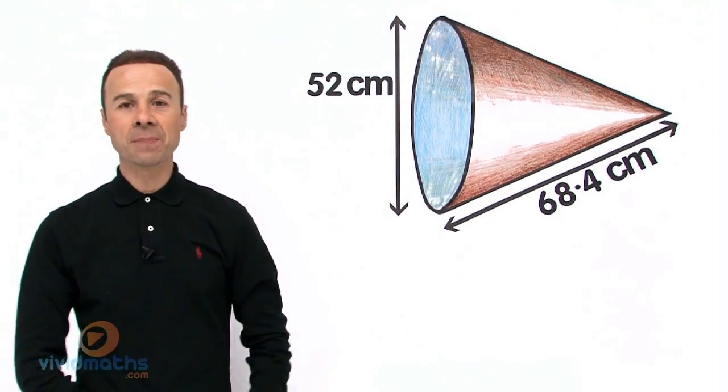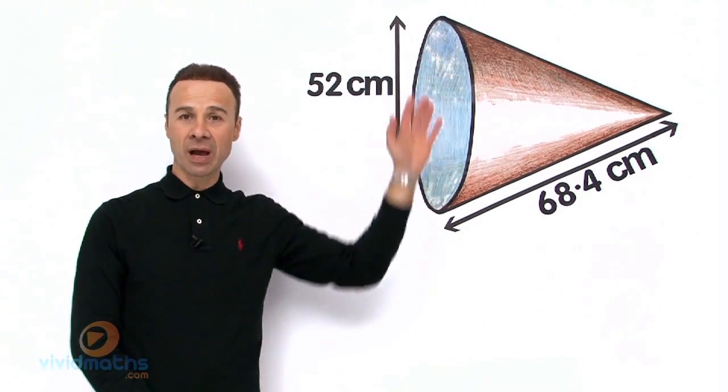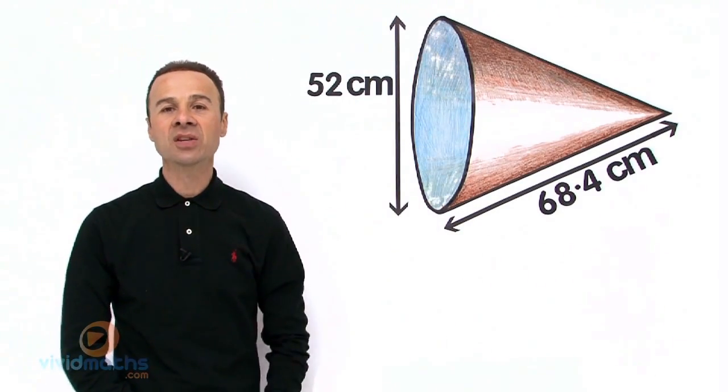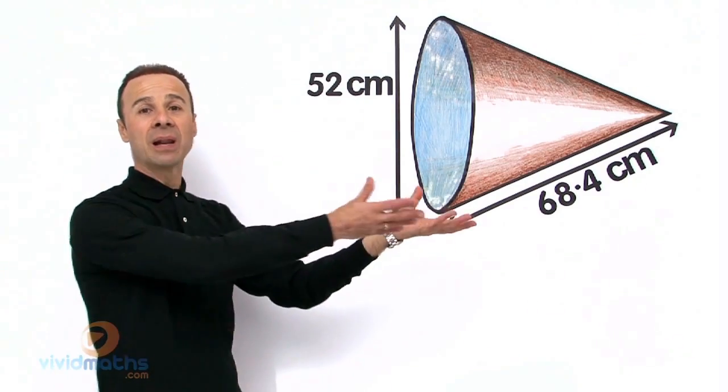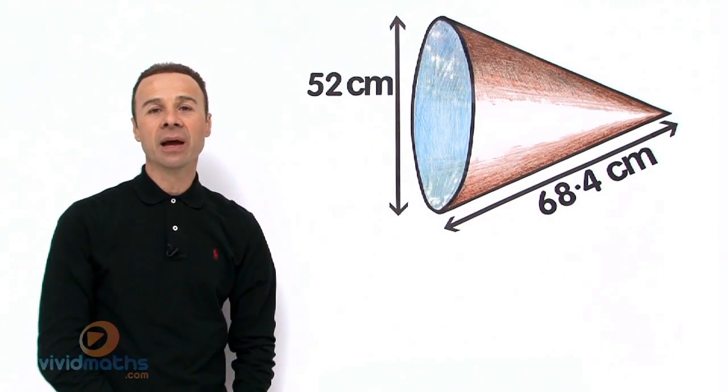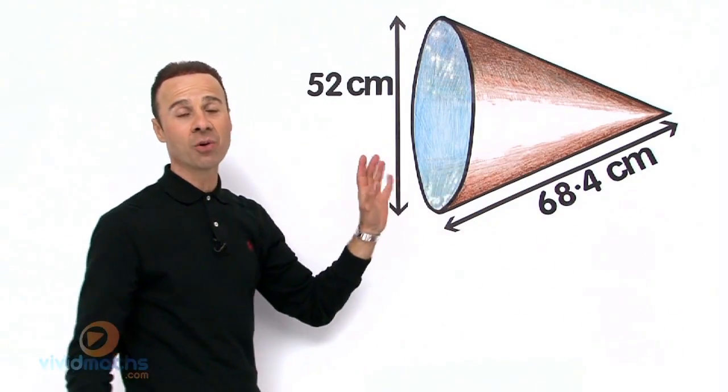Now we are going to take it in three steps. Step number one is to work out the radius because we are given the diameter, so we are going to chop that in half. Step number two, we are going to write up that formula. And step number three, we are going to plug and play the values in there and work out the complete entire total surface area for this cone.